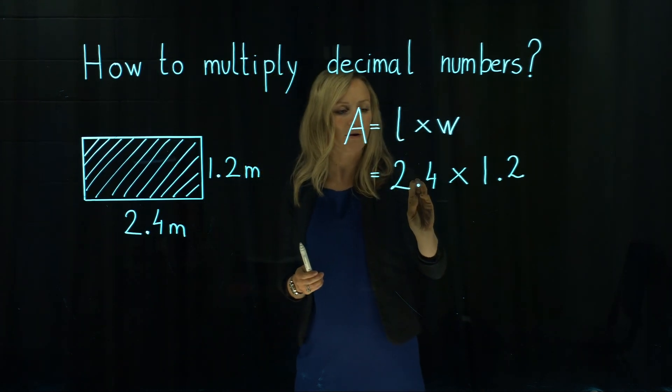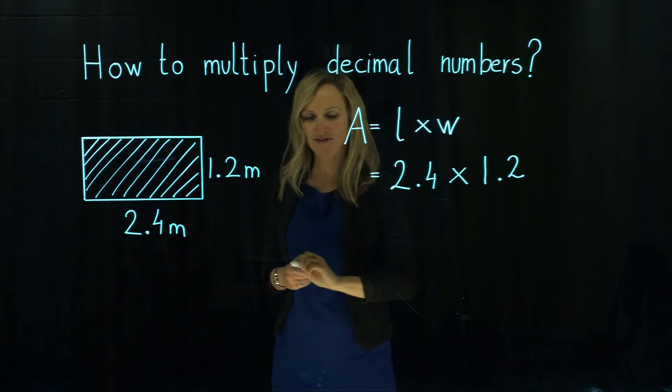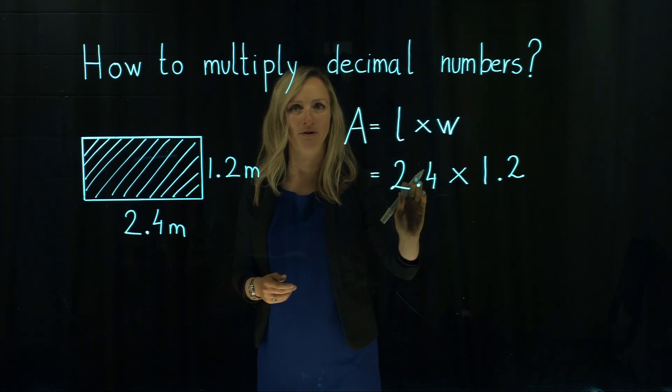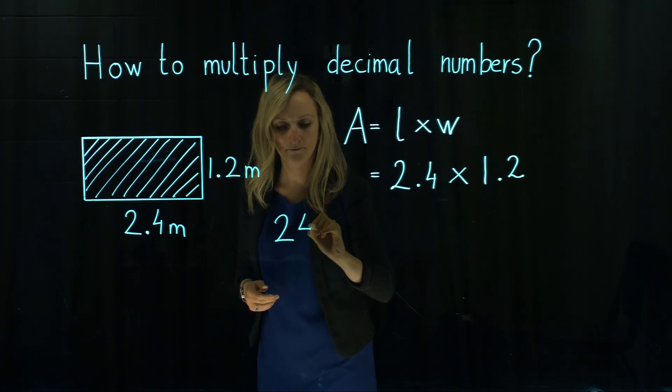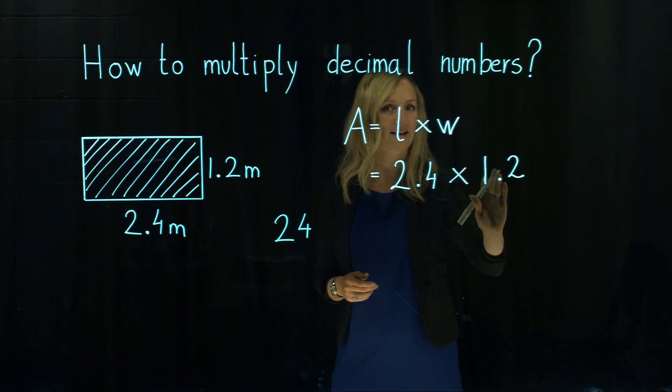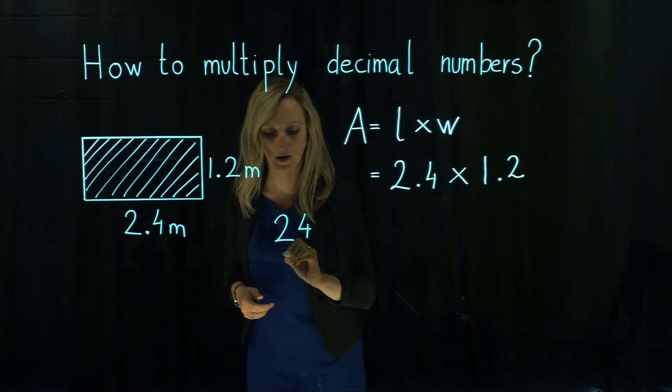First we will ignore the decimal points. When we ignore the decimal point in the first number, 2.4 without decimal point becomes just 24, and if we ignore the decimal point in the second number it becomes just 12.